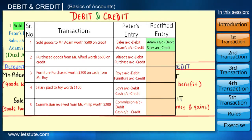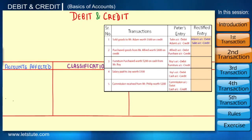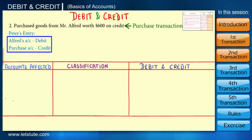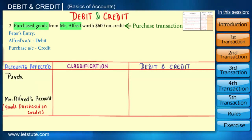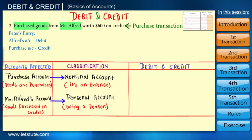As we have seen, every debit has an equal and corresponding credit effect. Here we have one debit and one credit effect, so the correct entry is: Mr. Adams' account debit and sales account credit. Now let's look at the second transaction, which is a purchase transaction — this is Peter's entry. The first step is the accounts affected: one is Mr. Alfred's account and the second is the purchase account. Purchase comes under the nominal account and Mr. Alfred is a personal account.